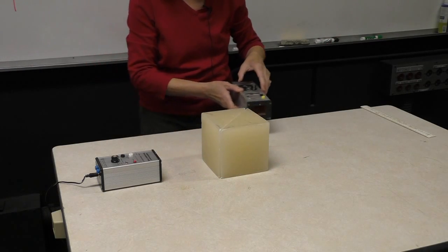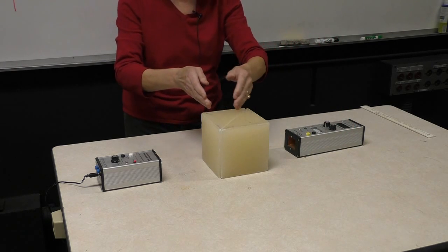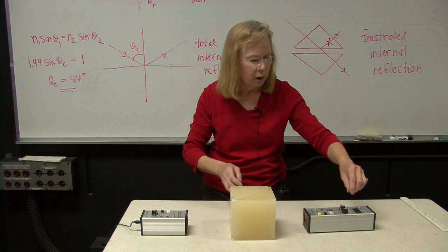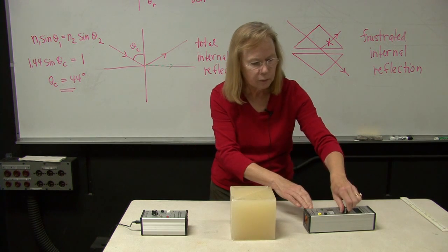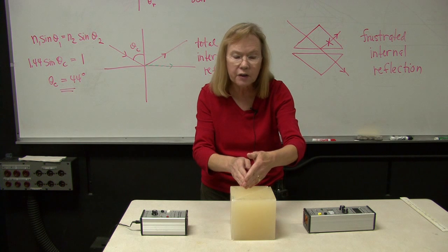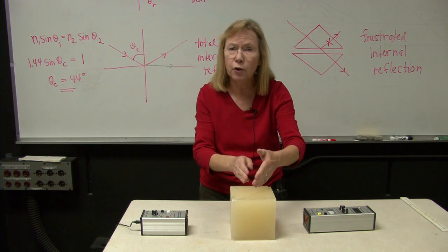So much more of the energy is able to pass through, even though we're coming in at an angle greater than the critical angle, that energy is able to jump across that gap. That's frustrated internal reflection.